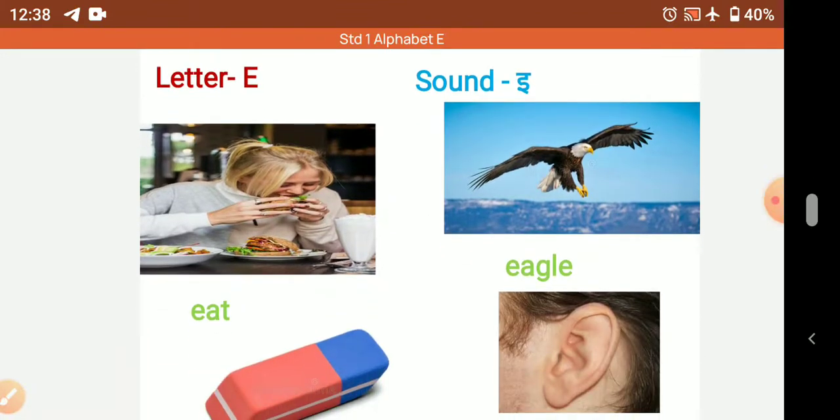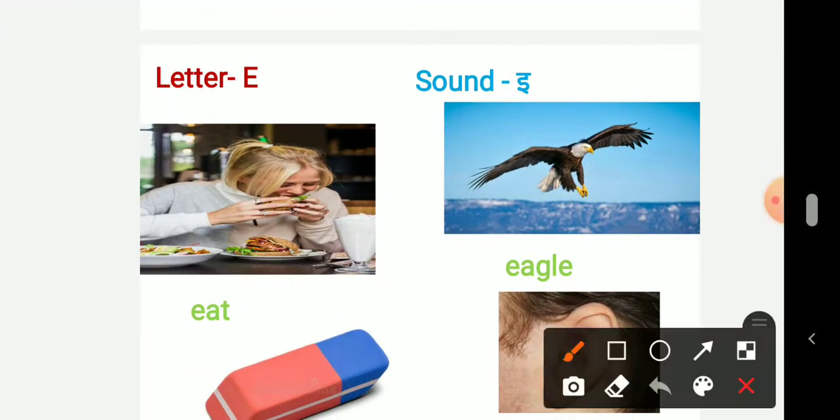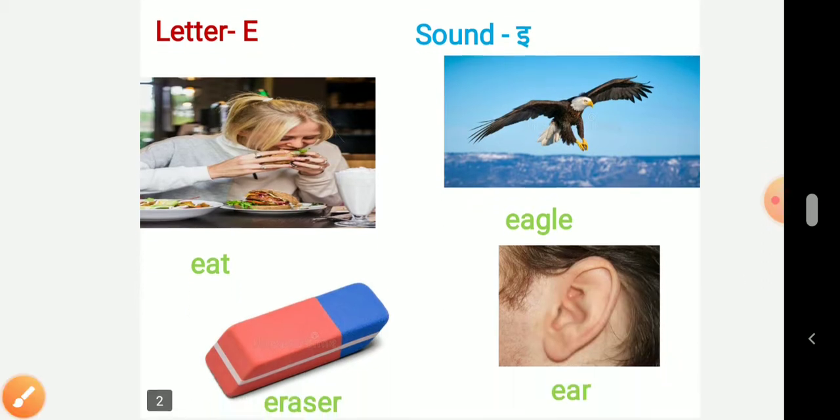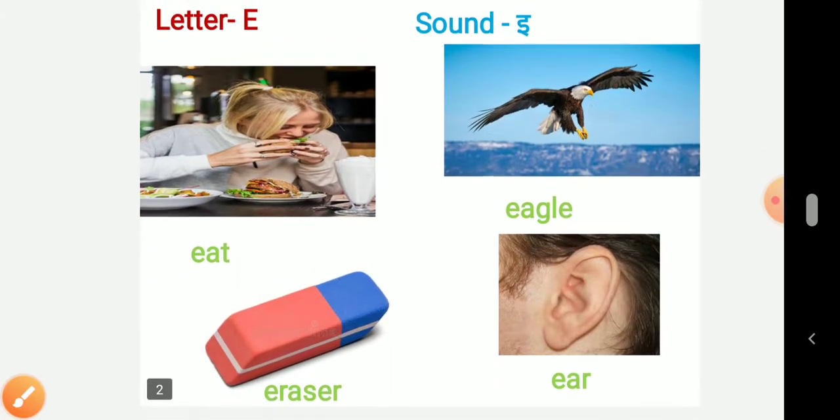Now here we can see letter E. E has four different sounds. Now we are going to see those. Here letter E and here the sound is E. So let's see the words.